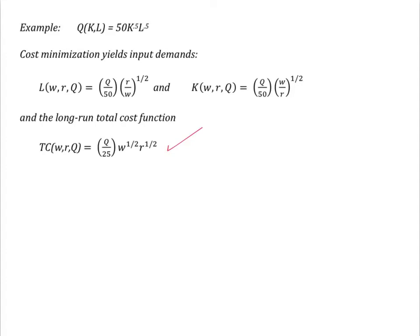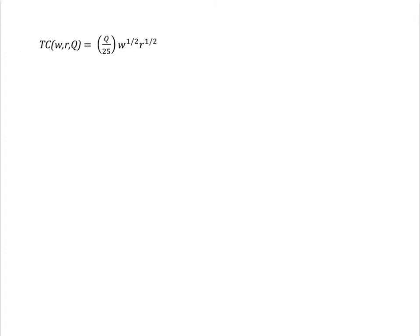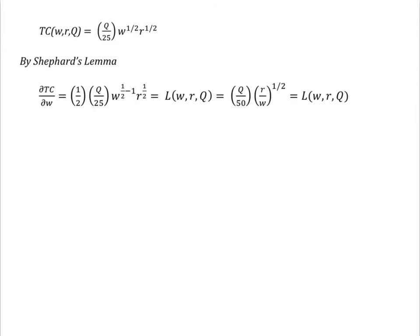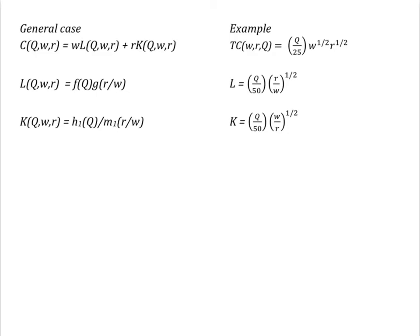Applying Shepard's Lemma to this total cost function yields the input demands. The trick now is to get rid of the input prices. Let's compare the general approach with the details for this particular example. The mathematics of the total cost function are such that when we extract the input demands, we end up with functions that are separable in Q and the input prices.